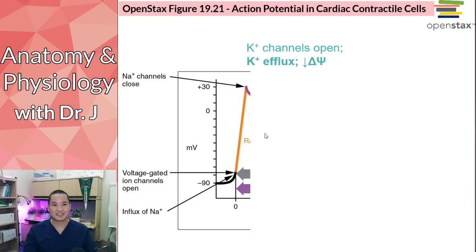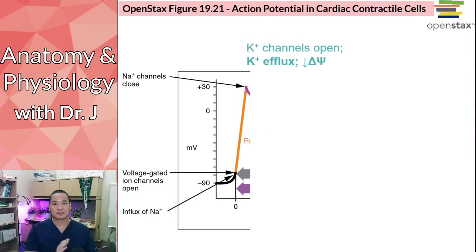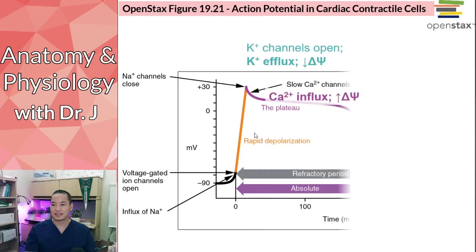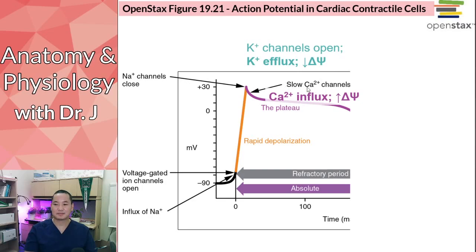Potassium is leaving the cell, therefore it's going to drop toward the negative side. Now this is where it's different from neuronal action potentials and from pacemaker action potentials — it hits a little bump in the road. Now these slow calcium channels open.